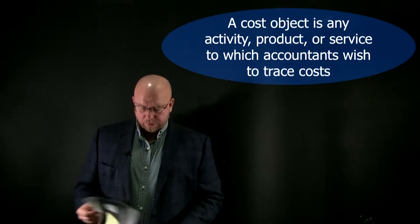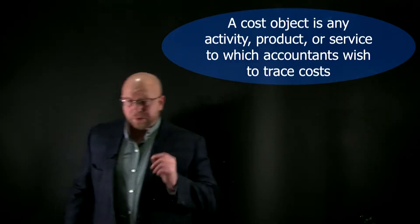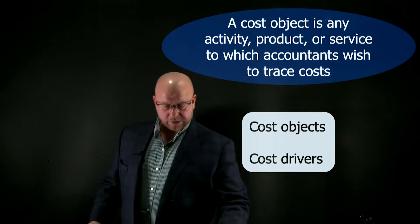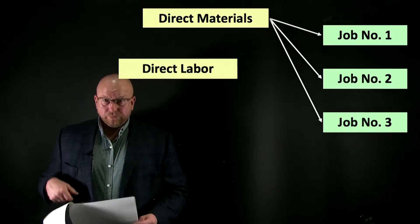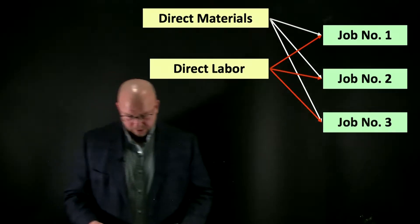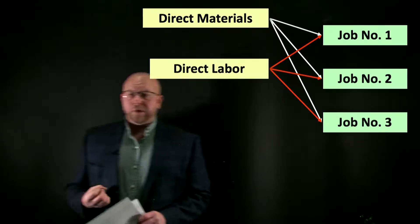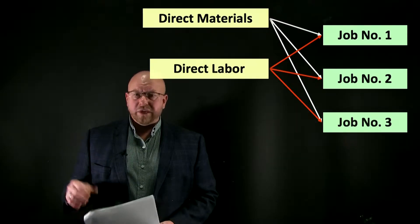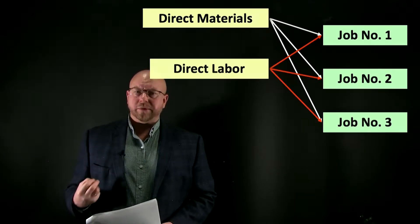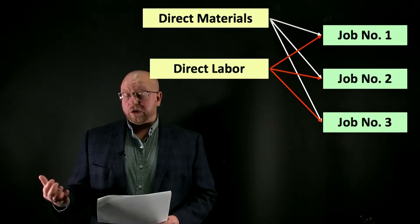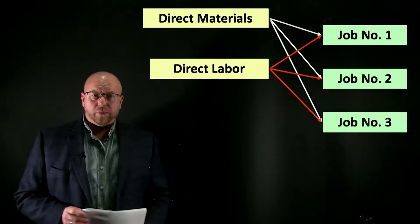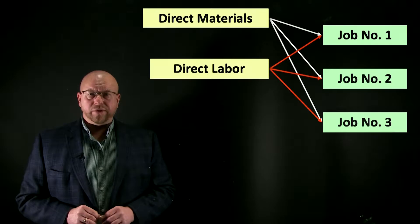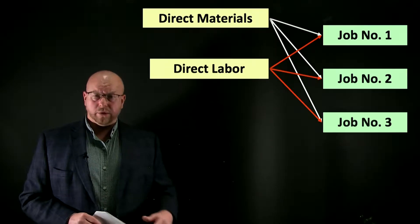In order to do that, we need to think about cost drivers. But before we get too deep into cost drivers, let's talk about three major categories of costs: direct materials, direct labor, and manufacturing overhead. Direct materials and direct labor we would typically consider to be traceable costs — something that can be conveniently or easily traced to a specific job or cost object. If we are a construction company and we use some lumber on job number one, two, or three, it's fairly easy to figure out the cost of lumber traced to any one of those jobs.